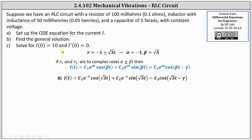This is the answer to Part B, the general solution. Now we need to find the particular solution given the initial conditions in Part C. When finding a particular solution, it's often easier to use the general solution as a sum of cosine and sine, which we will do. Using I(0) equals 10, we substitute zero for t and set the expression equal to 10.